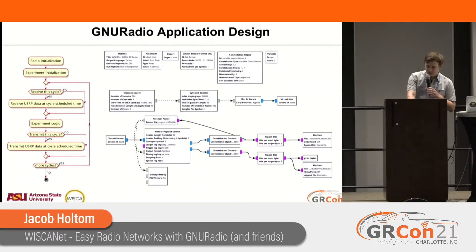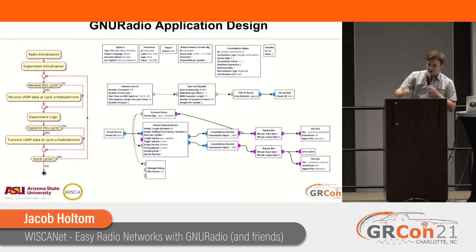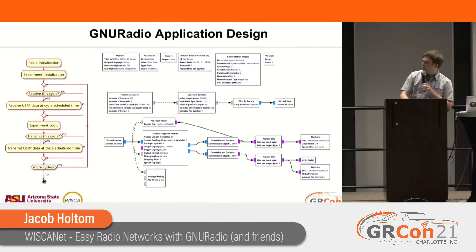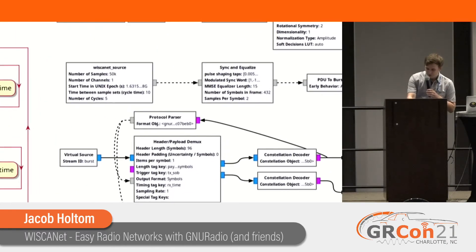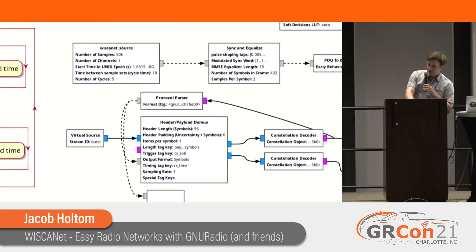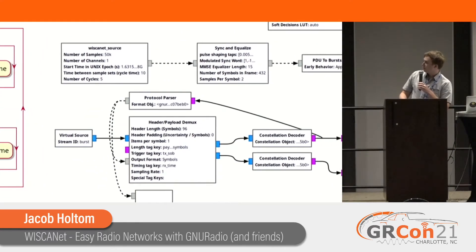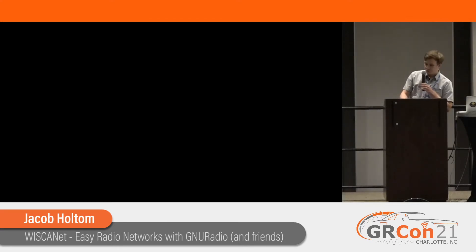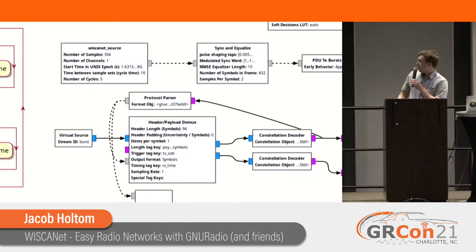The general idea is we initialize the radio, start up some experiments, and decide whether we'll receive or transmit on a given cycle for N cycles. All those parameters get defined in a little Wiscanet source or sink block. We also take a start time as a parameter at the top of the flow graph, pick a number of cycles, pick a number of time samples between cycles, and it'll just keep going for that time and then exit.